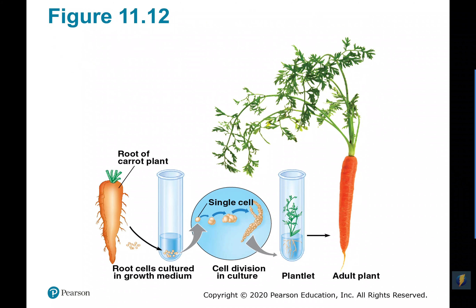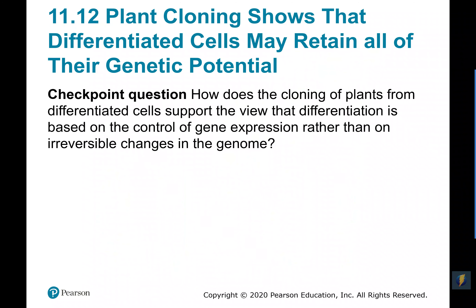We do cloning a lot with plants — any time you take a cutting from a plant, plant it, and give it some root starter, you are essentially doing cloning. Cloning of plants shows us that differentiation is really about gene expression, not different genes or irreversible changes in the genome. All the DNA is still there in the root cells; we just have to activate different genes during mitosis so that some cells become root cells, some become leaf cells, and so on.